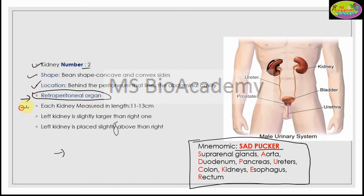Each kidney, if you measure its length, is in a range of 11 to 13 centimeters. A range is given because the left kidney is slightly larger than the right kidney. Also, the left kidney is placed slightly above the right one. You can take a screenshot of this slide for your notes.